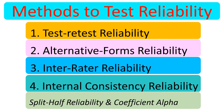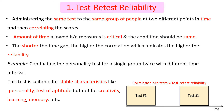The first method is test-retest reliability. This involves administering the same test to the same group of respondents at two different points in time and then correlating the scores, which indicates the reliability.